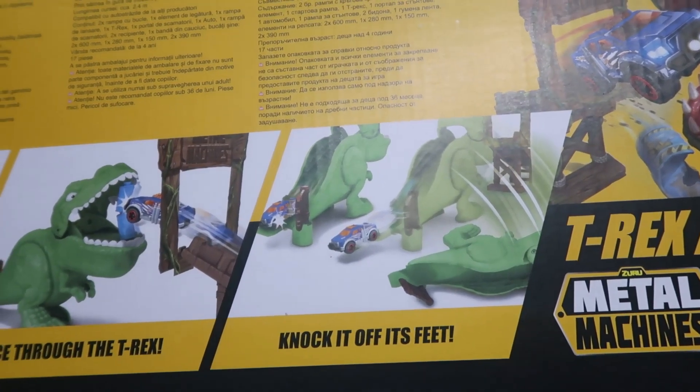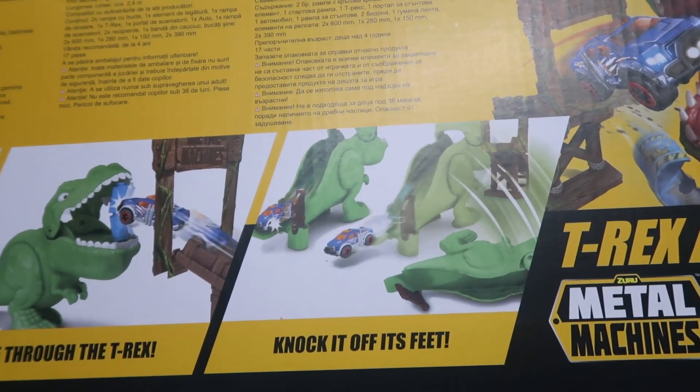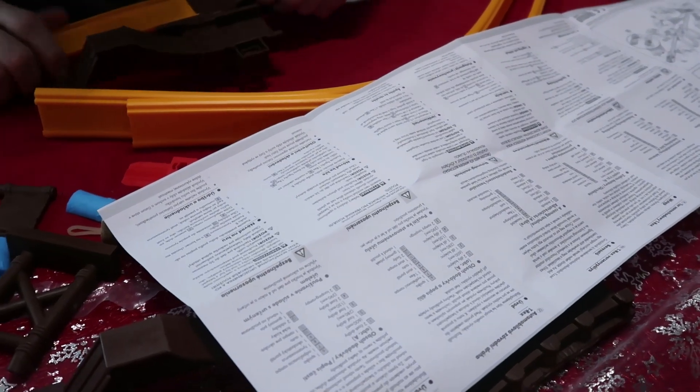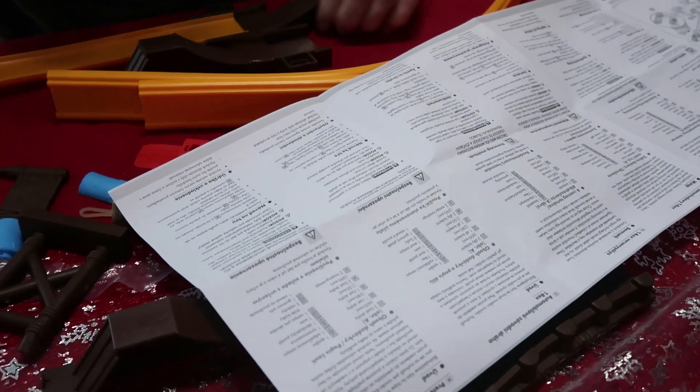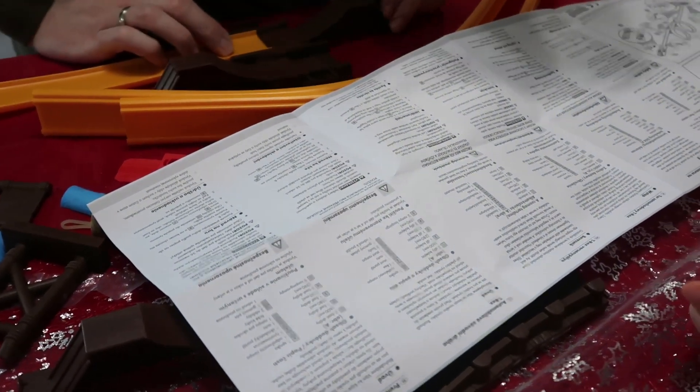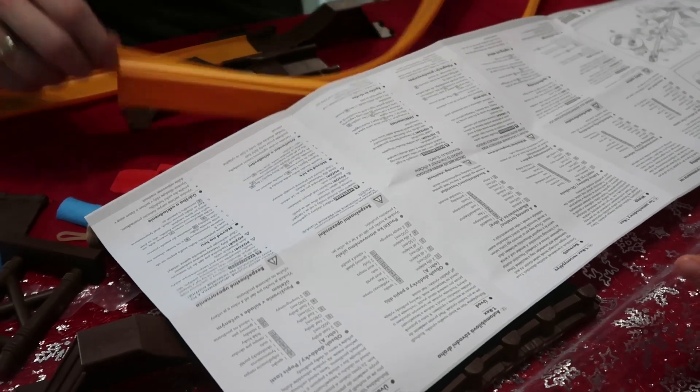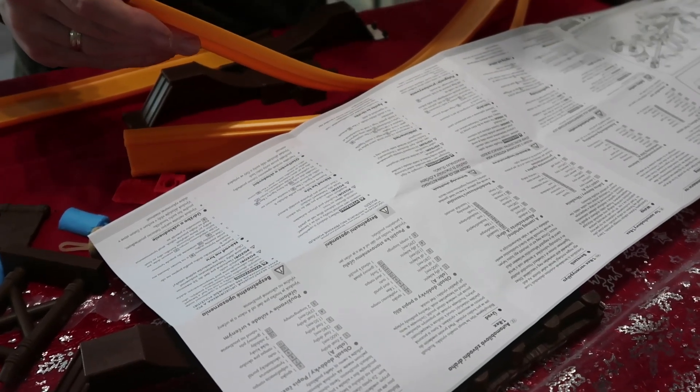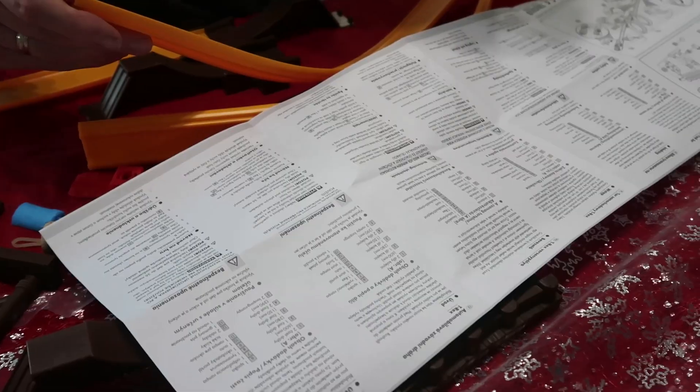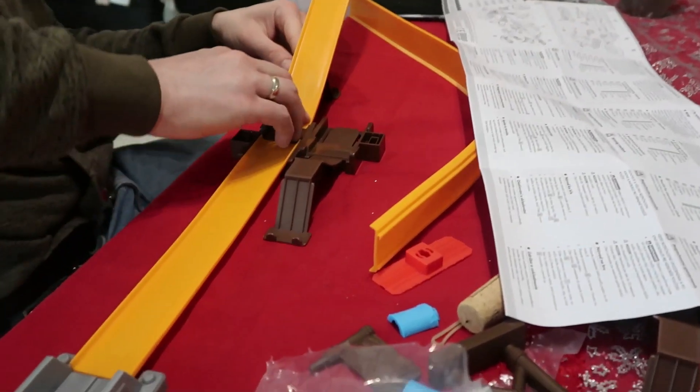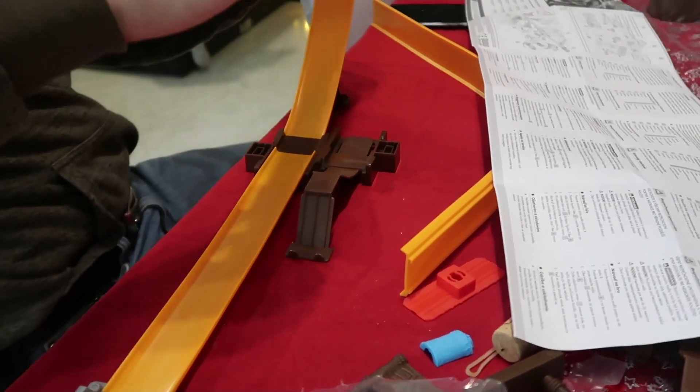This pack includes two-piece loop ramps, one-piece connector, one-piece starting ramp, T-Rex, stamp portal, car, stamp ramp, two-piece barrels, elastic band, track section and daddy is trying to figure out how to put this toy up with these connectors.